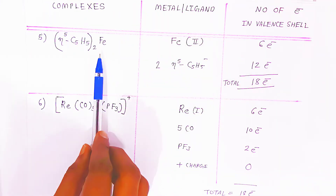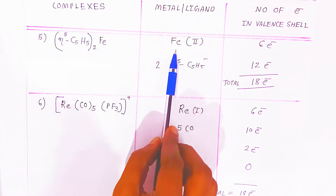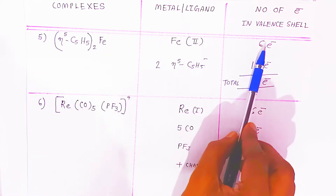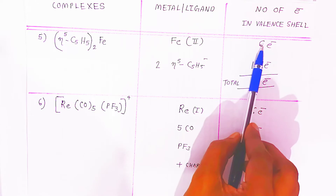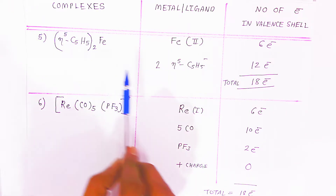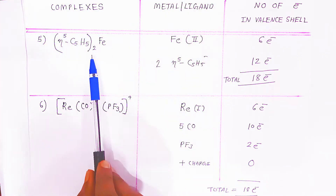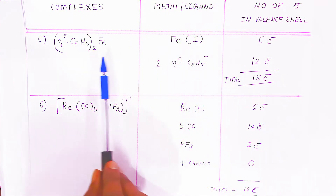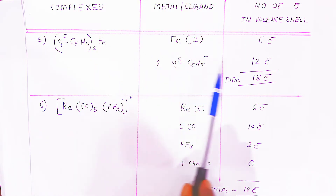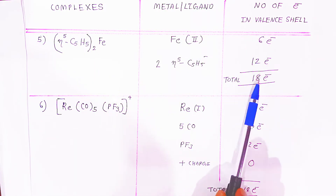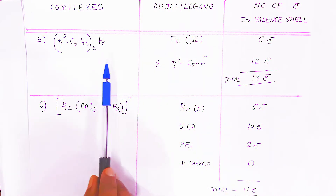The fifth example is ferrocene. Here the metal, iron, is in the +2 oxidation state, so the valence shell has 6 electrons. There are 2 cyclopentadienyl ligands, and the 2 rings of cyclopentadienyl together give 12 electrons. When you add the electrons — 6 + 12 — the total is 18 electrons. That is why ferrocene is a very stable complex.